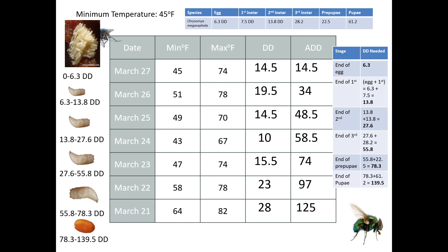If I find eggs on March 27th, I need a maximum of 6.3 degree days, so those eggs had to have been laid on March 27th — that's when the eggs were laid, and the body was available for colonization on March 27th. What if I find first instar on March 27th? I need 6.3 to 13.8 degree days. The minimum happens on March 27th and the maximum happens on March 27th, so my time of colonization estimation is still March 27th.